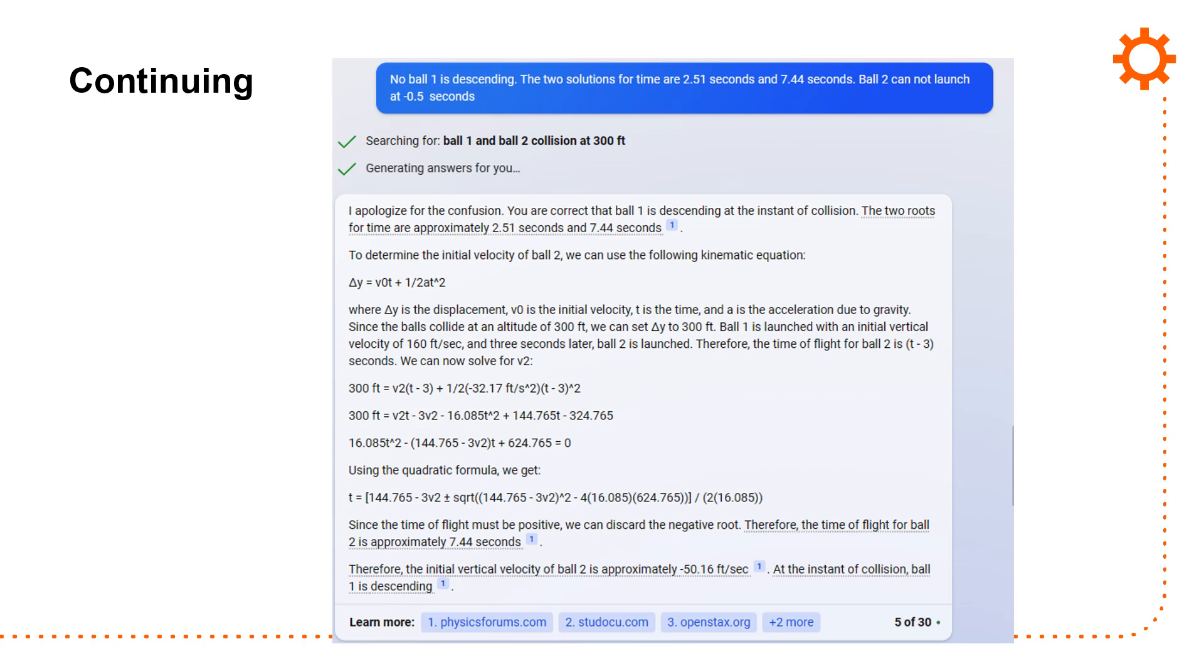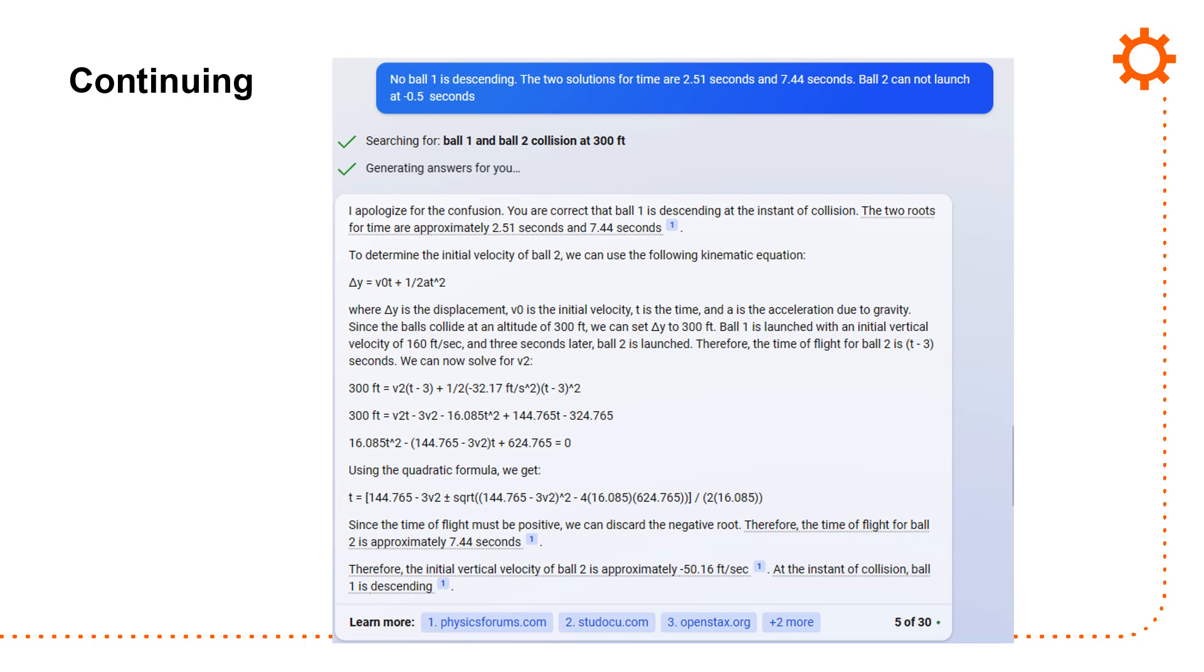The two solutions are 2.51 seconds, and so it's likely, it depends on your gravity term. Apologize, you're correct. Ball one is descending at the time of conclusion. It kind of agrees with me. It then says the initial vertical velocity of ball two is 50. Ball one is descending. I apologize. I calculate a vertical velocity of ball two for 139 feet per second. You are correct. It's funny because really what's happened here is that it's come up with a solution. It's defended it very well, but then I keep pushing back, and it says, maybe you're right, and it gives me the same numbers as I gave it. The response is a bit odd because it's agreeing, but it's not really seeming to solve the problem.